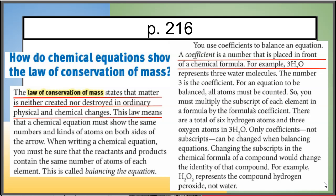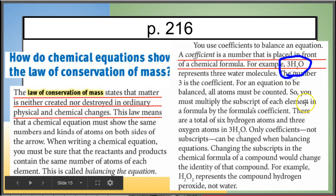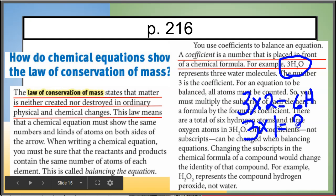We're going to use something called a coefficient. Coefficients are numbers that you place in front of a chemical formula. For example, in 3H2O, the two is a subscript — it says two hydrogen atoms in the molecule — but the three is a coefficient meaning there are three molecules of H2O. The coefficient multiplies everything behind it, so three times two gives six hydrogens, and three times one gives three oxygens.